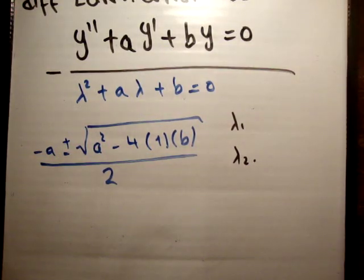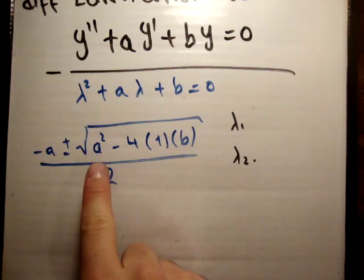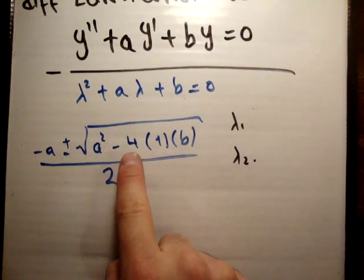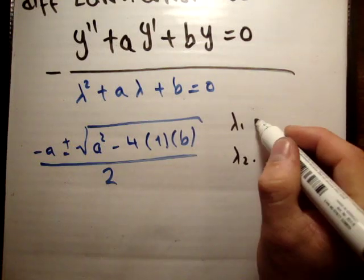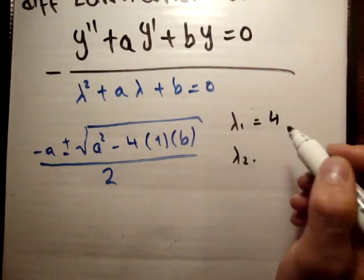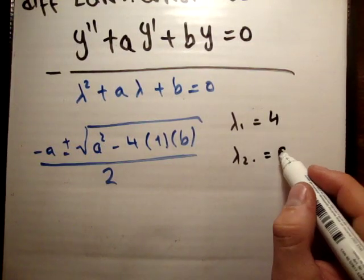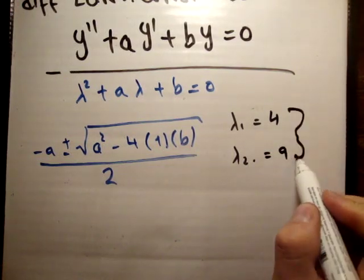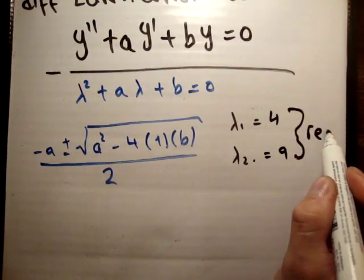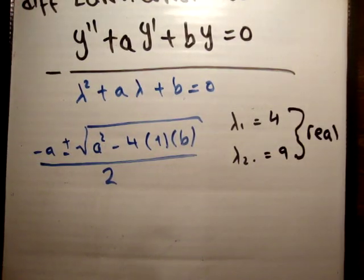In the case where a squared is greater than 4b, you're going to get two real numbers. So lambda 1 might be equal to 4 and lambda 2 might be equal to 9 — they are real numbers.